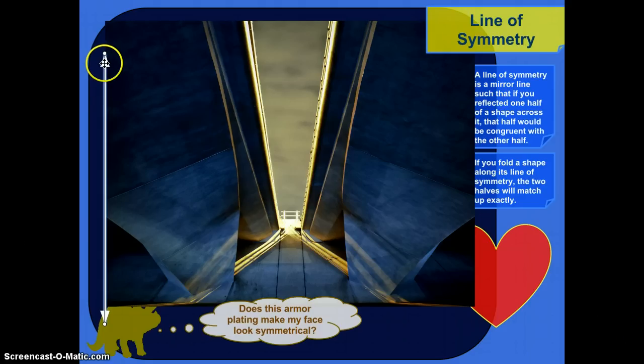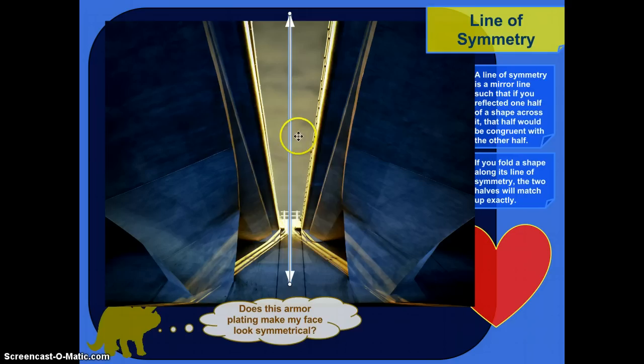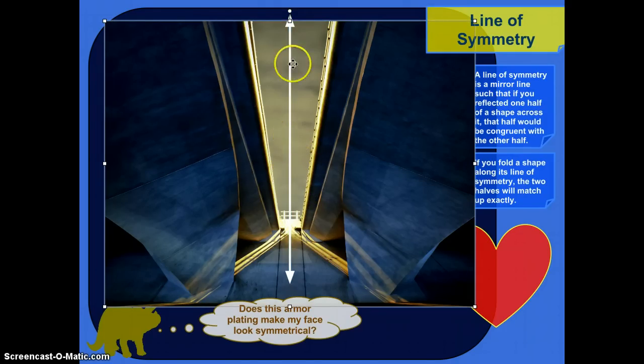It's a very symmetrical picture, which means if we were to draw a line straight down the middle like that, all corresponding points would be an equal distance from that line. So for example, this part of the bridge is this distance away from the line, and that same distance is the mirror image of that part of the bridge.